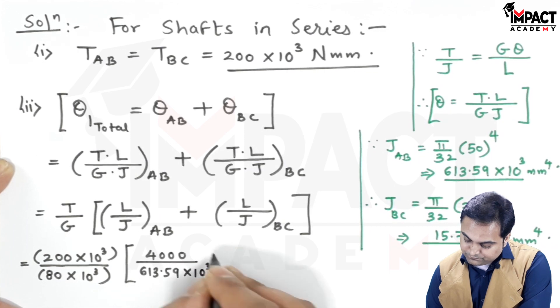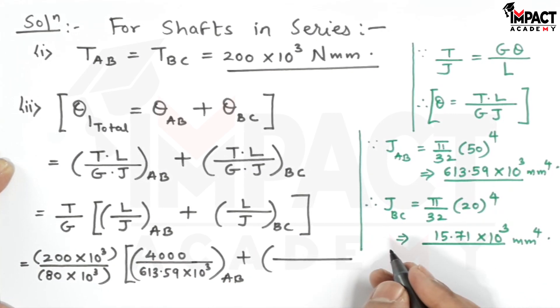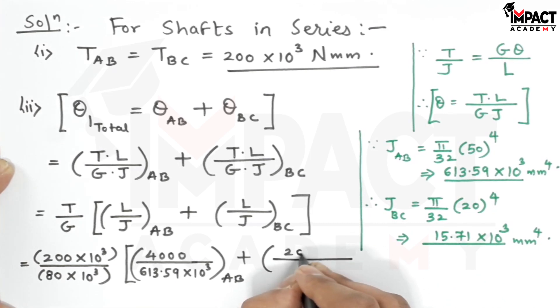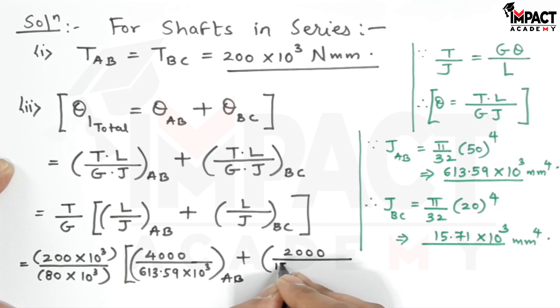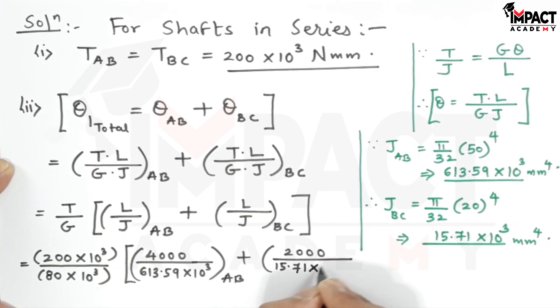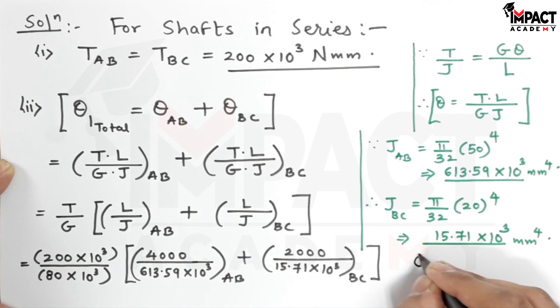Length of portion BC is 2m or 2000mm. J for portion BC is 15.71×10³ mm⁴. From this, I am going to get the value of θ_total.